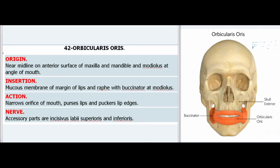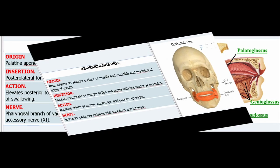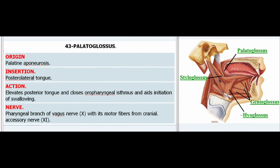42. Orbicularis Oris. Origin: Near midline on anterior surface of maxilla and mandible and modiolus at angle of mouth. Insertion: Mucous membrane of margin of lips and raphe with buccinator at modiolus. Action: Narrows orifice of mouth, purses lips, and puckers lip edges. Accessory parts are incisivus labii superioris and inferioris.